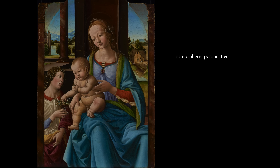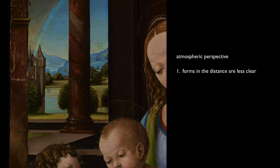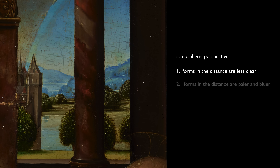Atmospheric perspective has two components. One is forms in the distance are represented with less clarity than forms in the foreground. If we look at a distant mountain range, we don't have the detail that we have when we look at something close to us. Similarly, a distant mountain range is being seen through more atmosphere, so it loses the specificity of its color and tends to look lighter and bluer.